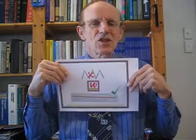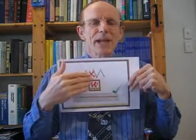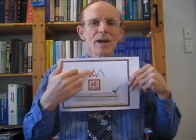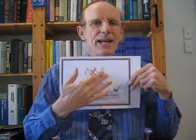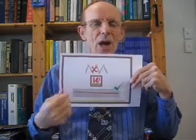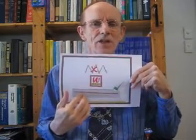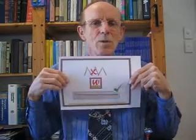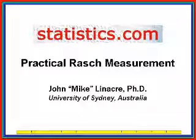Unlike other statistical techniques which just use whatever numbers happen to arrive — and it doesn't really matter whether they make sense or not — Rasch insists on building straight lines, unidimensional variables, along which we can see progress and about which we can clearly think.